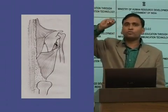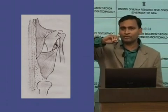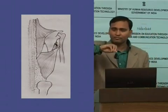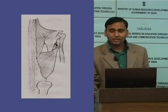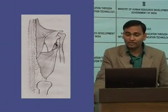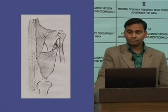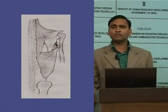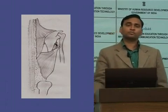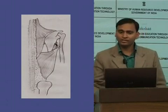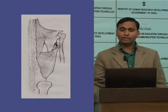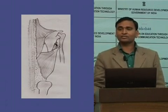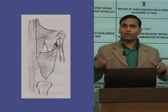We have 12 thoracic vertebrae. If we leave the first six, it means the origin is from T7 through T12. Some fibers originate from the intermediate sacral crest of the sacrum. The fibers originate from the spinous process of T7 to T12 and also from the intermediate sacral crest of the sacrum.